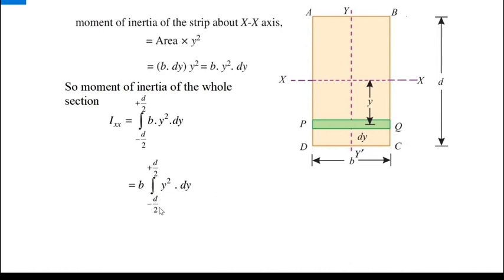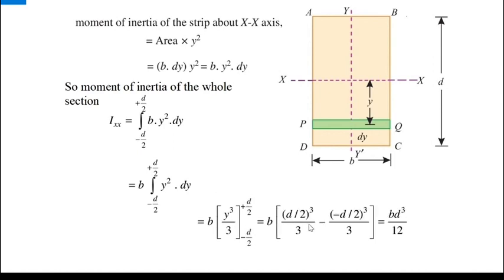This becomes b × integral from −d/2 to +d/2 of y²·dy. The integral of y² is y³/3. Putting in the limits, we get (d/2)³/3 − (−d/2)³/3. Working this out gives us the final equation: Ixx = bd³/12. That is the moment of inertia of a rectangular section.